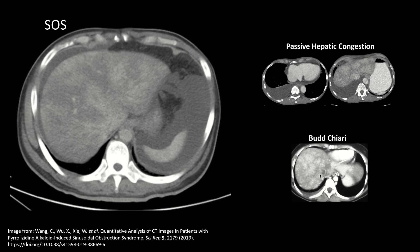In patients with SOS you can get findings of portal hypertension as well. But you won't see the engorged IVC and hepatic veins like in passive hepatic congestion, and you won't see a large venous thrombus or central cause like in Budd-Chiari. Instead, you think of SOS in the appropriate clinical setting — most commonly in patients with a known history of stem cell transplantation.